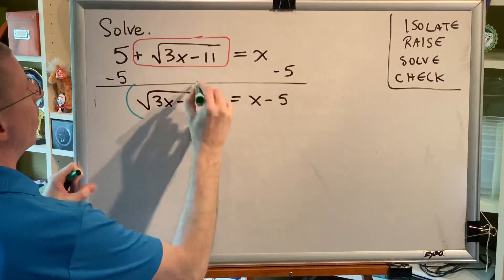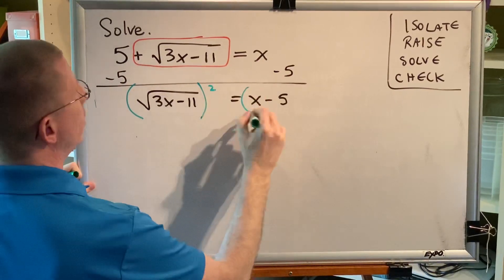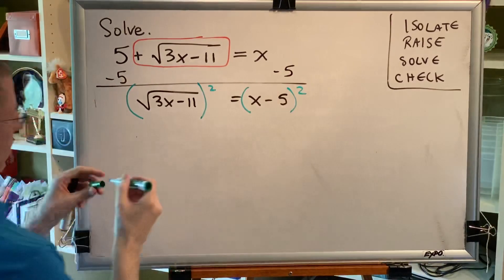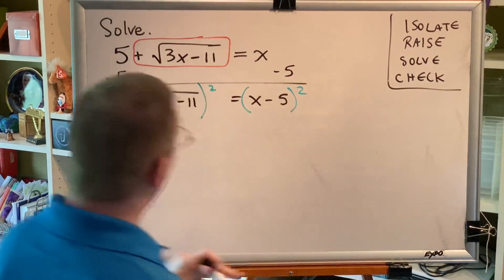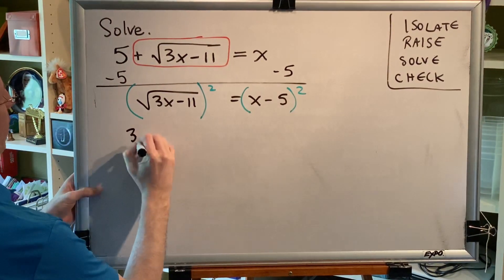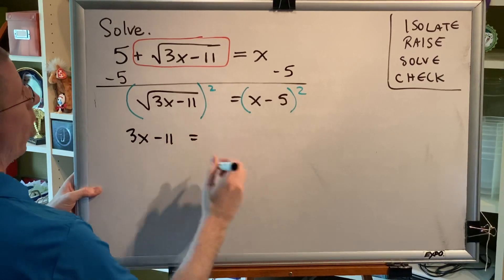So the entire left side gets raised to the second power, and the entire right side gets raised to the second power. On the left, the square and the square root cancel, leaving us 3x subtract 11.